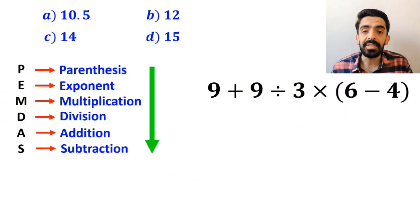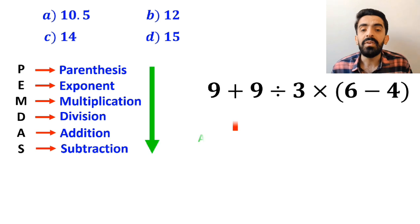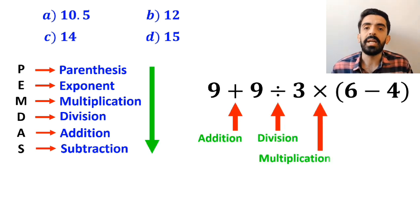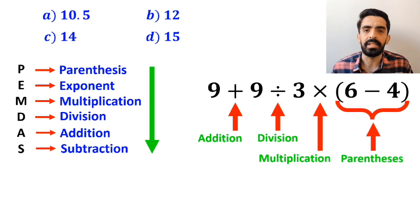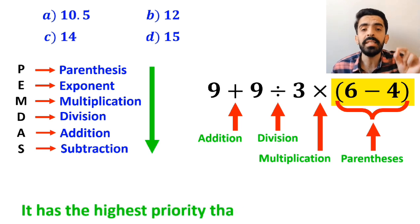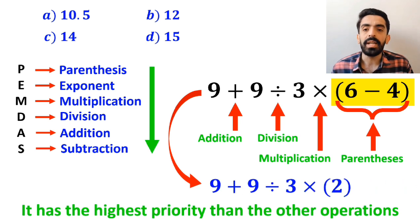As you can see in the image, in this expression, first we have an addition sign, then a division sign, followed by a multiplication, and finally parenthesis. We must start with the parenthesis first, because it has the highest priority over the other operations. So, instead of this expression, we can write 9 plus 9 divided by 3 times 2.